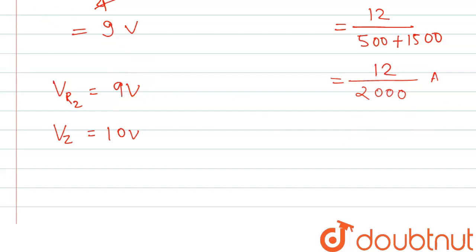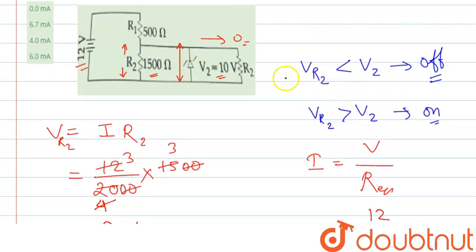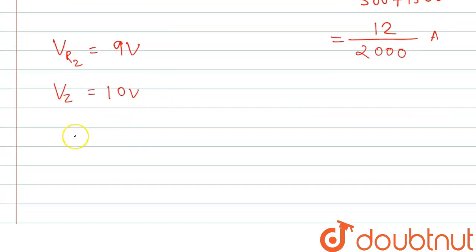So if we check our condition, the voltage across the Zener diode, then this condition is true, that is the VR2 is less than the Vz.